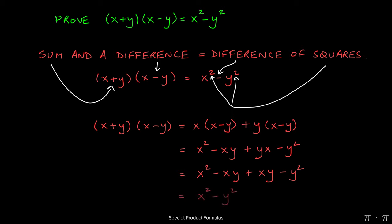At this stage, when we combine like terms, these two terms cancel each other out because one's a negative, the other is a positive, leaving behind just x squared minus y squared, which is what we were trying to prove.